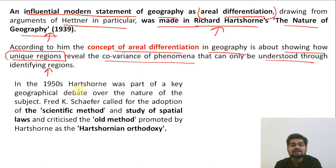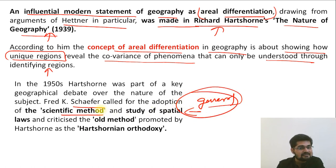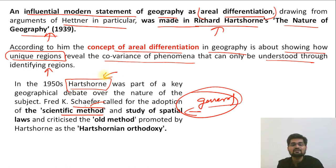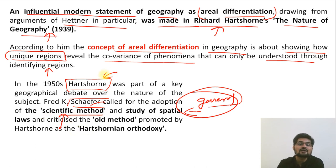There was an important debate with another scholar known as Schaefer, who adopted a scientific method for the study of spatial laws, talking about law-making and generalization on the basis of scientific method, contradicting Hartshorne's approach. The Hartshorne–Schaefer debate in the 1950s was very famous: Schaefer argued that geography is a scientific discipline about scientific law-making and generalization, whereas Hartshorne talked about areal differentiation and uniqueness in a particular region.